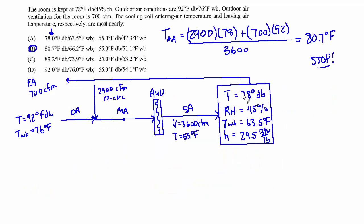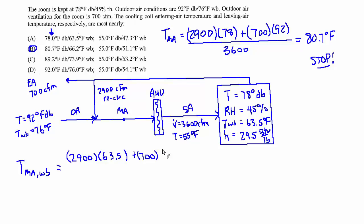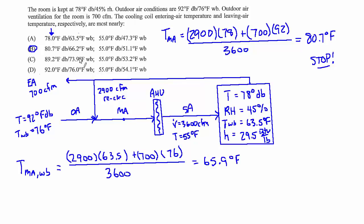We can do a similar mixing calculation using wet bulb temperatures: T_mixed_air_WB = (2,900 CFM × 63.5°F WB + 700 CFM × 76°F WB) ÷ 3,600 = 65.9 degrees Fahrenheit. This is very close to the answer choice value of 66.2°F. The small error comes from reading the wet bulb off the psych chart imprecisely, which is close enough and supports our answer.